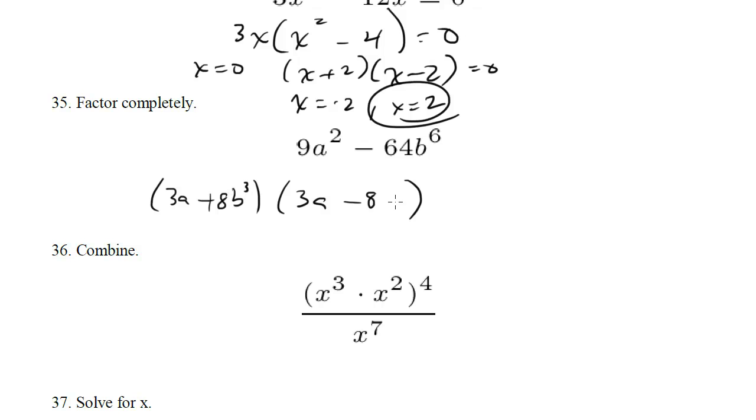Be careful here, we want it to be b cubed because b cubed times b cubed adds up those exponents and becomes b to the 6. So here are your factors. Difference of two perfect squares. It's very similar to the last one up here.